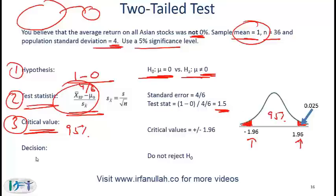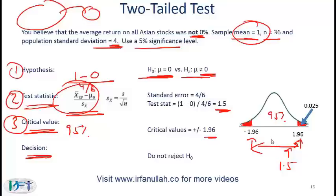Step 4 is making a decision by comparing the test statistic with the critical value. If the test statistic is within the range — so if your test statistic is 1.5, which is less than 1.96 — then you do not reject the null hypothesis. Intuitively, with a sample size of 36 and a sample mean of 1, that sample mean is not large enough to reject the null hypothesis that the mean is 0.